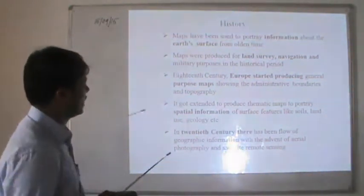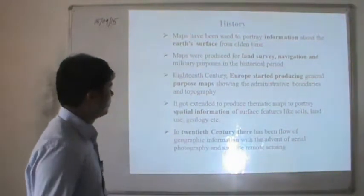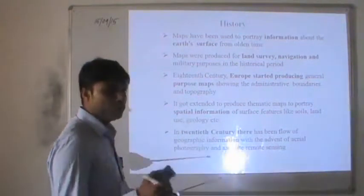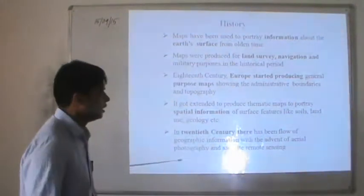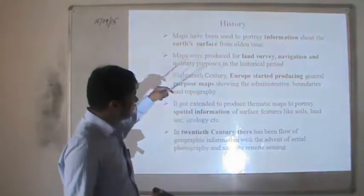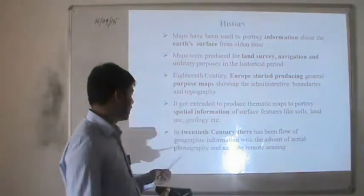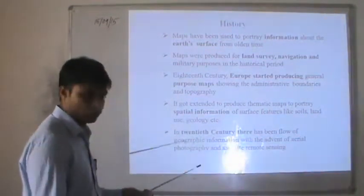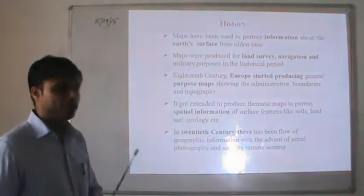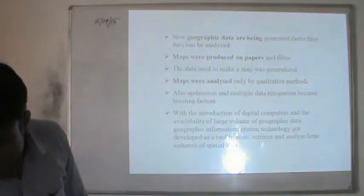History of GIS: Maps have been used for portraying information about the Earth's surface from olden times, for land survey, navigation, and related purposes. Europeans started producing maps for boundary locations, administrative controls, and topography. Maps were then improvised with different features like soil, land, and geology, and by 2023 we are able to map even natural resources. This is how GIS has evolved.